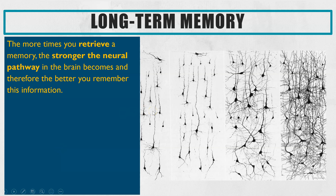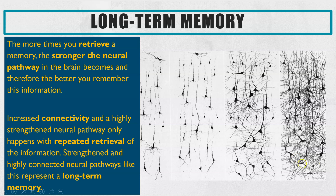We can see this developing in brain images of neural pathways. On the left, neurons that aren't connected have the ability to store information, but you wouldn't be able to retrieve it. The more times you retrieve or revise the information, the more connections you get and the stronger the neural pathway. On the far right, images from a brain where someone has revisited information repeatedly show a really strong neural pathway — in other words, a strong long-term memory, because they can retrieve that stored information easily.